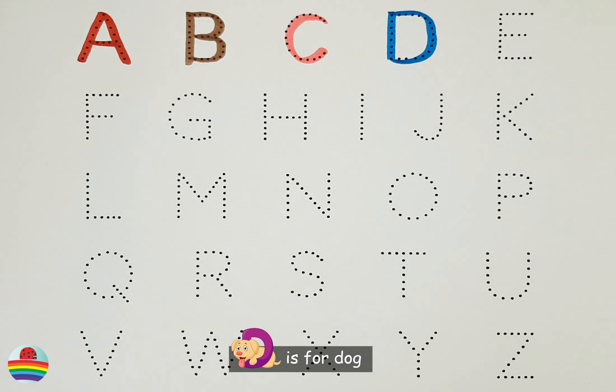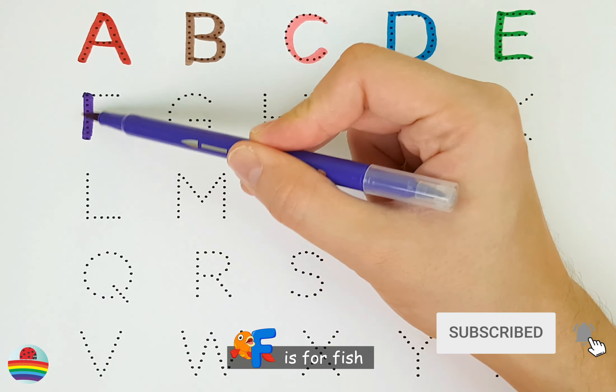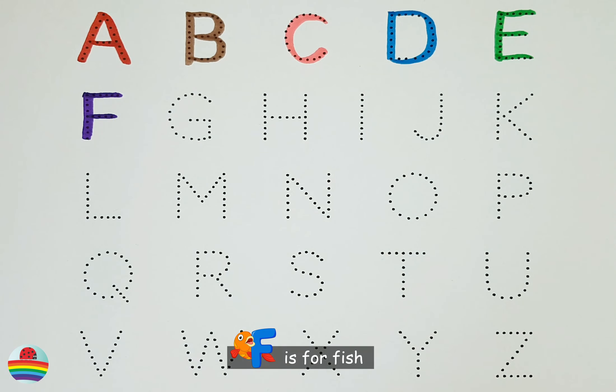D. D is for Dog. E. E is for Elephant. F. F is for Fish.